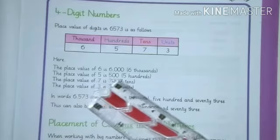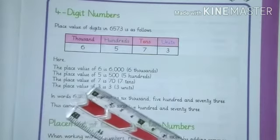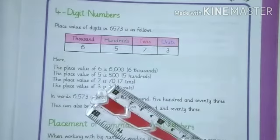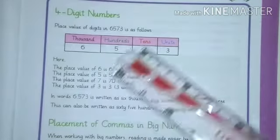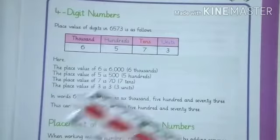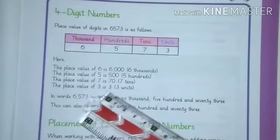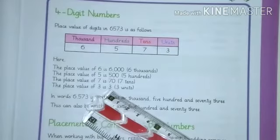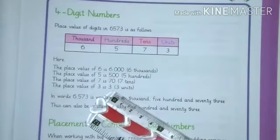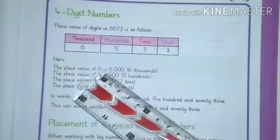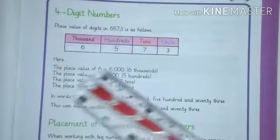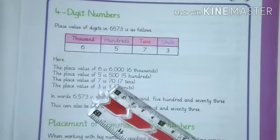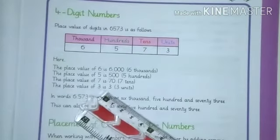The place value of 7 is tens. With 7 we will write one zero just because it's at tens place. The place value of 3 is units, so it is unit. We will not write any zero. With unit, we know thousand have four digits, hundred has three digits, tens has two digits, and unit have one digit.